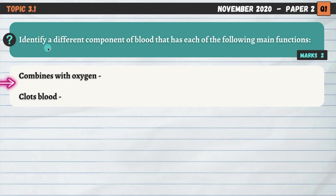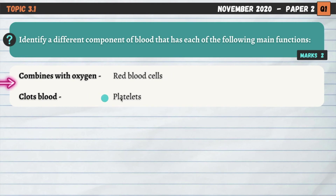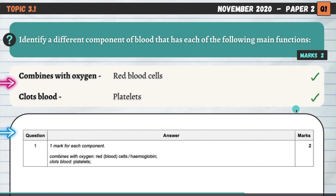Identify a different component of blood that has each of the following main functions. So again we're back on the components of blood, just like we were with the first question. Which component of blood combines with oxygen? And which component clots blood? Combines with oxygen — that's red blood cells. Platelets are involved with blood clotting. White blood cells are involved with the immune system, helping protect us against bacteria, viruses, and other pathogens. Plasma, the liquid component of blood, helps to transport all these other blood cells, as well as nutrients, oxygen, carbon dioxide, and so on.